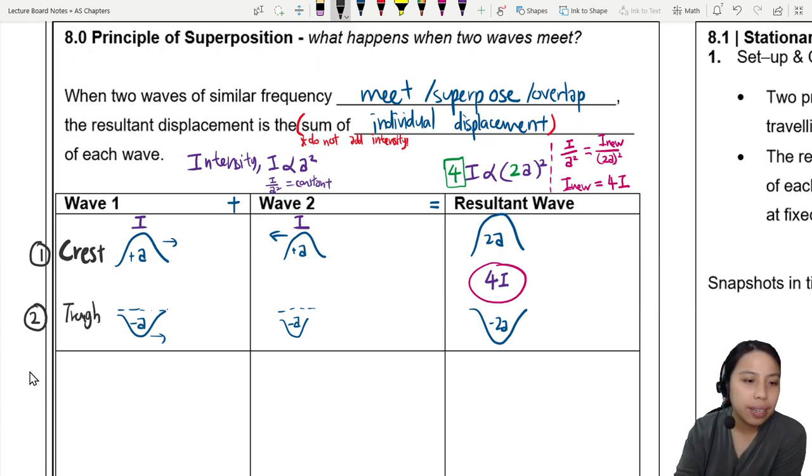Alright. Let's do a few more cases. What if they cancel out? These two cases, the waves add. They become a larger amplitude. So larger displacement or larger amplitude. Here, since we're adding amplitude.